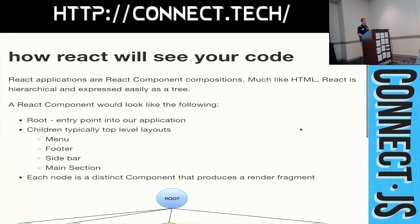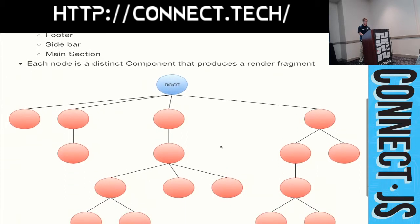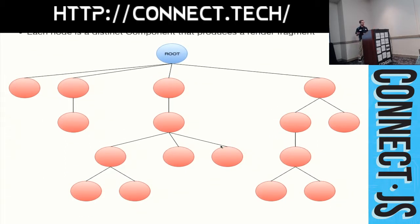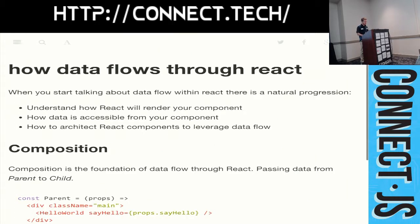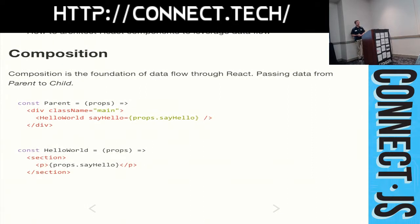So how will React see your code? React will see your code as a tree. You have some entry point into the application, and then you have some kind of layout mechanism — maybe you have a menu, sidebar, main section. Each one of those composes other components into making a full UI, but it all looks like a tree — either a fat tree or a deep tree. So how does data flow through this tree? We need to understand how React is going to render our component, how you access data from a component, and really how to leverage that.